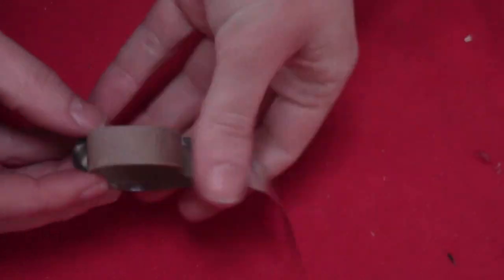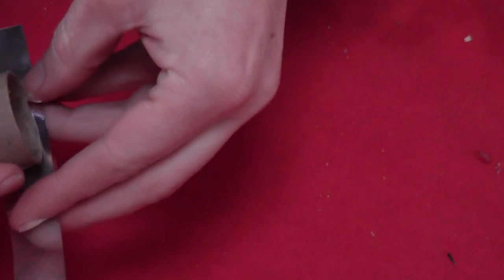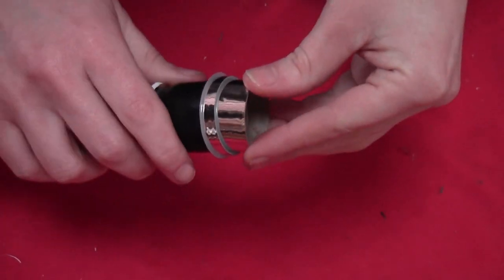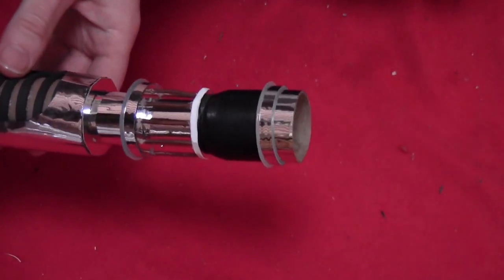And then I took another piece of cardboard tube, covered that in silver. And that fit right in the end of the lightsaber there. And I glued it in.